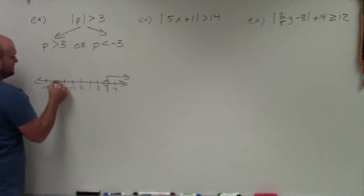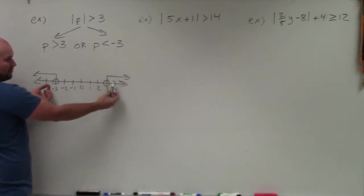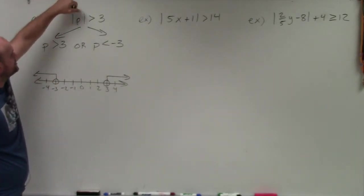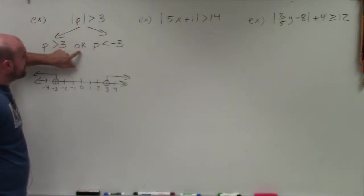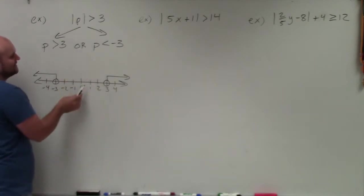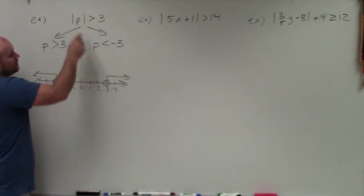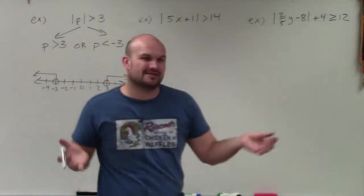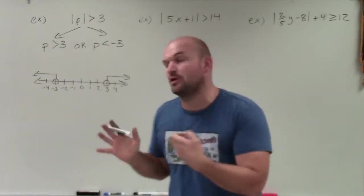And here, p is less than negative 3, so I do another open point at negative 3 and shade going to the left. You can see that if you pick negative 4 or 4, both are part of the 'or' inequality solution and both work. The difference is: when it's greater than or greater than or equal to, it always produces a conjunction of 'or' compared to 'and.' Because if you pick 0 and plug it in, absolute value of 0 is 0, and 0 is not greater than 3. So just remember: less than or equal to gives you 'and'; greater than or greater than or equal to gives you 'or.'